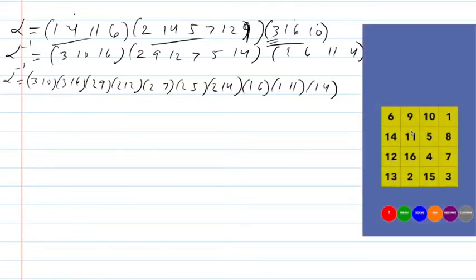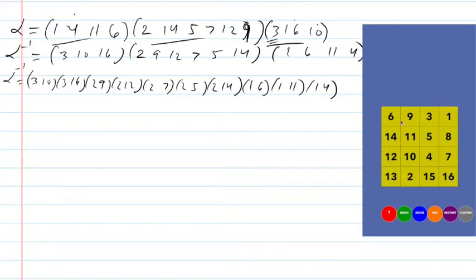According to this, I should first do position 3 with position 10, and then position 3 with position 16. Then it was 2 with 9 — not 1 with 9 — so I'll undo that and do 2 with 9.